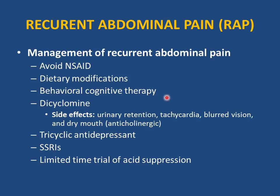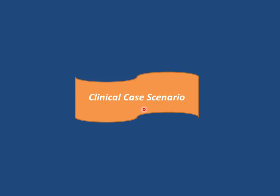Management of recurrent abdominal pain: avoid NSAIDs such as ibuprofen and naproxen. Dietary modification with increased fiber. Behavioral cognitive therapy. Reassure parents that it is not organic — this reduces family stress, frequent ER visits, and unnecessary investigations. Dicyclomine can be used for pain to relax smooth muscle — counsel about anticholinergic side effects: urinary retention, tachycardia, blurred vision, and dry mouth. Tricyclic antidepressants (amitriptyline) and SSRIs can also be used. Try acid suppression for 4 weeks to assess effect.